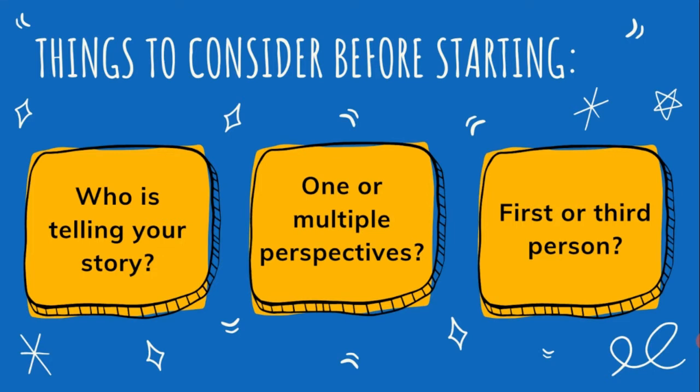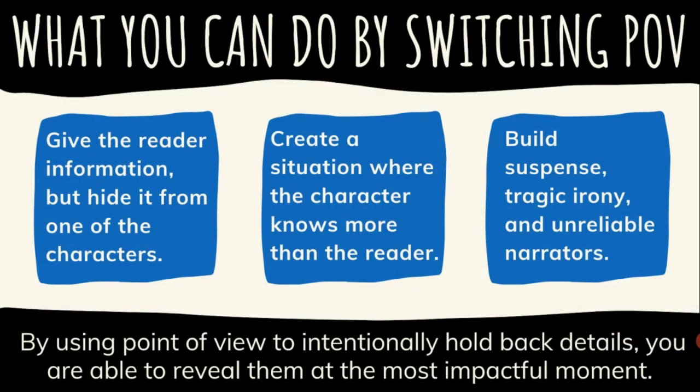However, you can get around this by utilizing multiple perspectives. As discussed in the last video, you can jump around between characters to show multiple sides of a story, as long as you make sure to avoid confusing or frustrating your reader. So if you want your reader to know something but want the character to remain unaware, reveal that information from another character's point of view. By either switching points of view or by using third person omniscient, you can create a situation where the reader knows more than the character does.